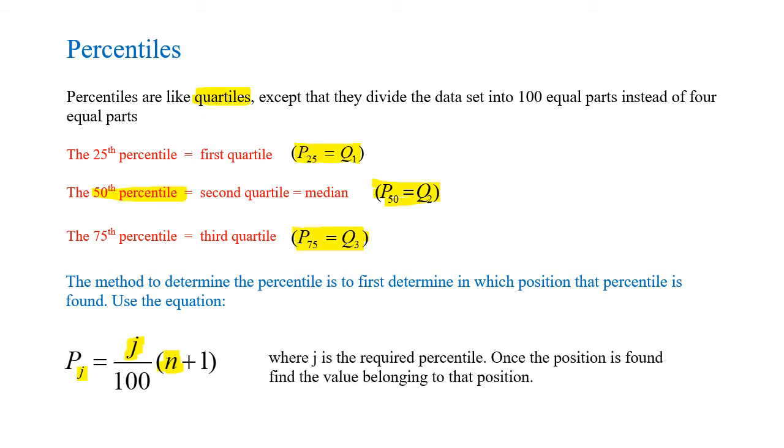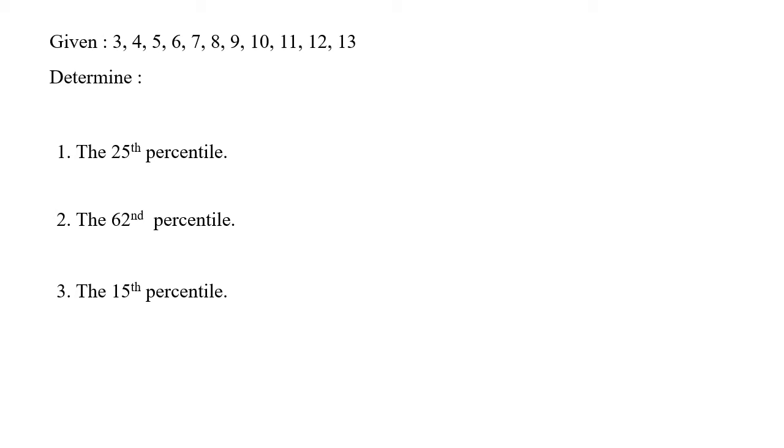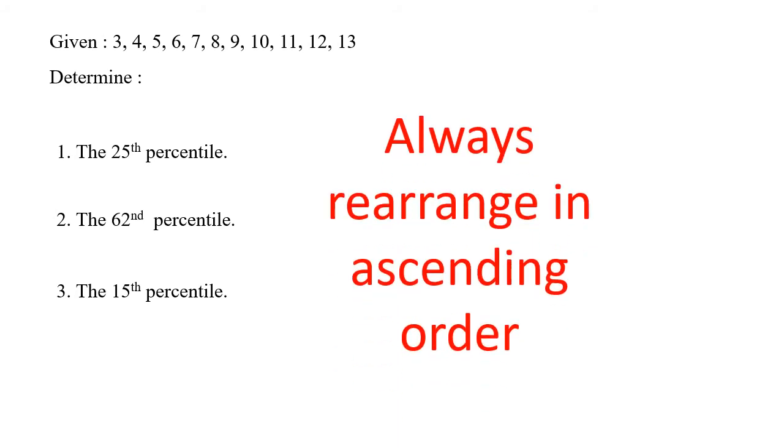Now let's look at this in terms of an example. Given a sequence of numbers, determine the 25th percentile (P25), the 62nd percentile (P62), and the 15th percentile (P15). Very important when working with quartiles and percentiles is to rearrange all the numbers in ascending order. If I look at the given example, this is given in ascending order. It will not always be the case. Failure to do that will result in totally incorrect answers.